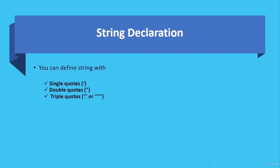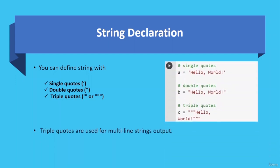You can define a string with single quotes, double quotes, or triple quotes, where triple quotes are used for multi-line string output. For example: 'A = "hello world"' with single quotes, 'B = "hello world"' with double quotes, and with triple quotes for multi-line output where the next word appears on the next line. So you can define a multi-line string using triple quotes.